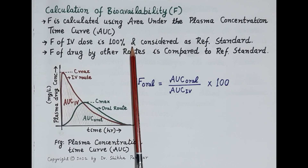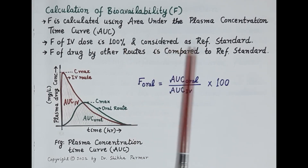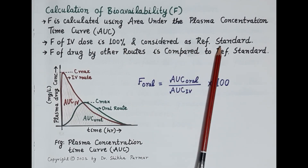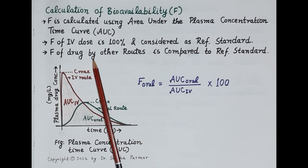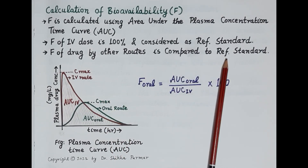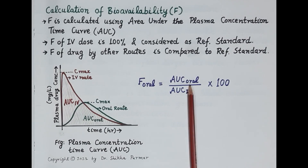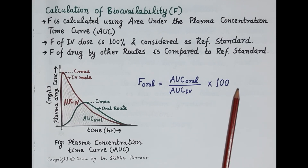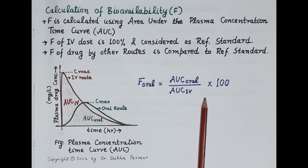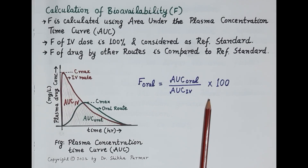Bioavailability of an intravenous dose is by definition 100 percent, and hence it is considered the reference standard. Bioavailability of drug administered by other routes is compared to this reference standard. Bioavailability of an orally administered drug is calculated as the ratio of the area under the curve of the oral dose to the area under the curve of the intravenous dose, multiplied by 100. This is the formula for the calculation of bioavailability.